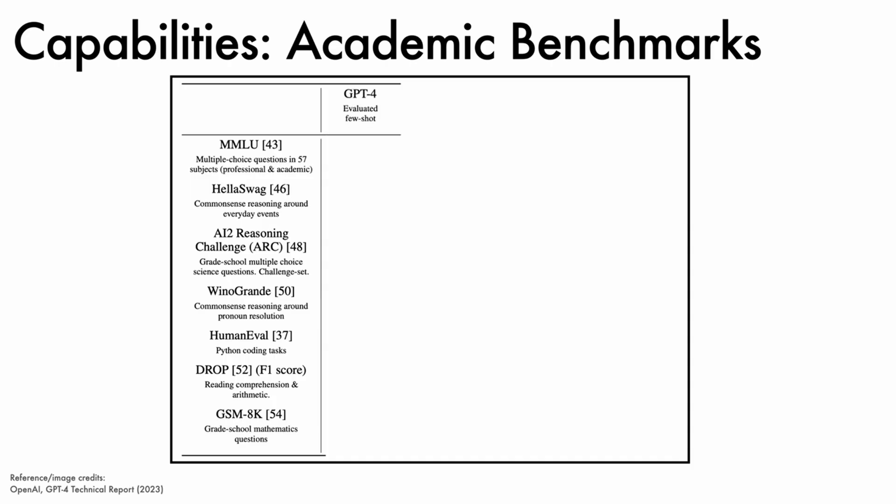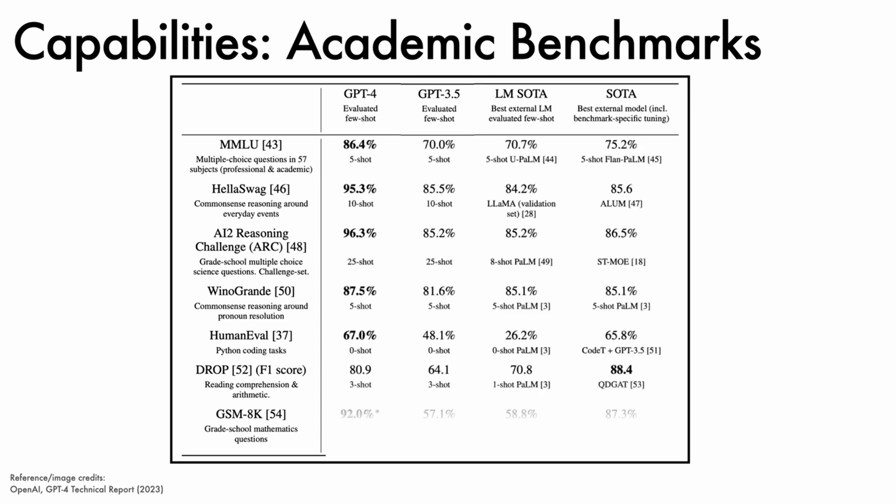We can compare GPT 4 few-shot with GPT 3.5 few-shot, other best few-shot from other language models, and the current state-of-the-art allowing for benchmark-specific fine-tuning. Here are the results on all benchmarks. GPT 4 performs very strongly, outperforming GPT 3.5 and the prior few-shot state-of-the-art in some cases by very large margins. GPT 4 also outperforms fine-tuned models in all cases except the DROP benchmark, where a fine-tuned method still performs best.